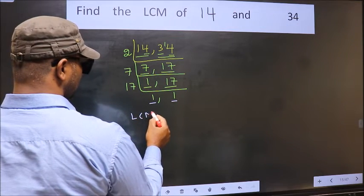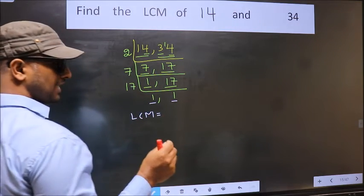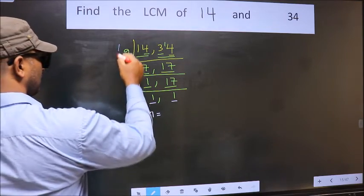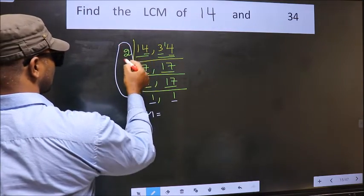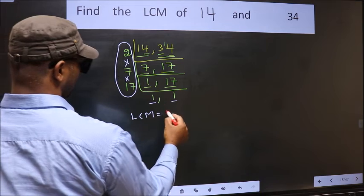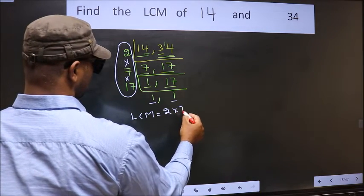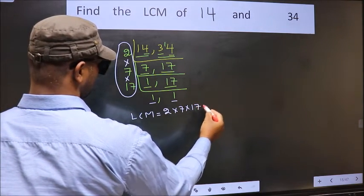So, our LCM is the product of these numbers. That is 2 into 7 into 17.